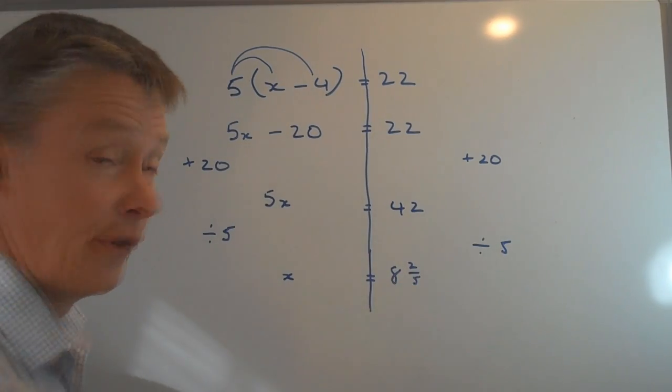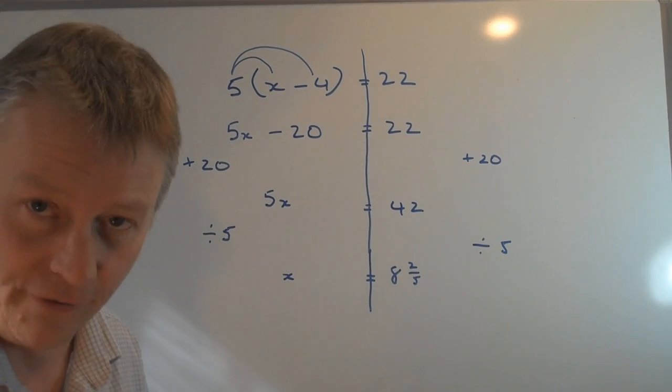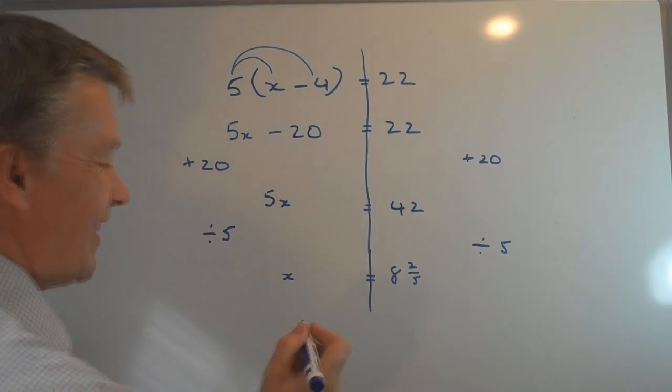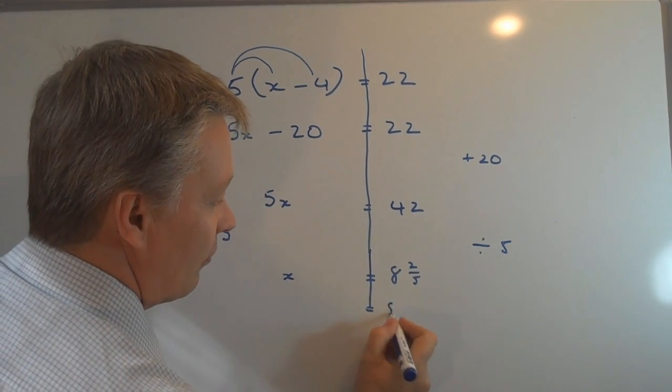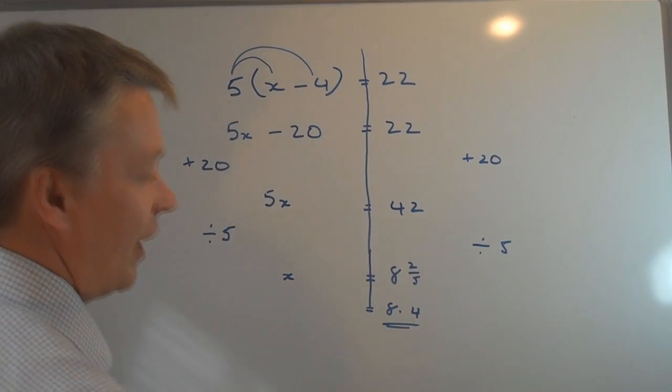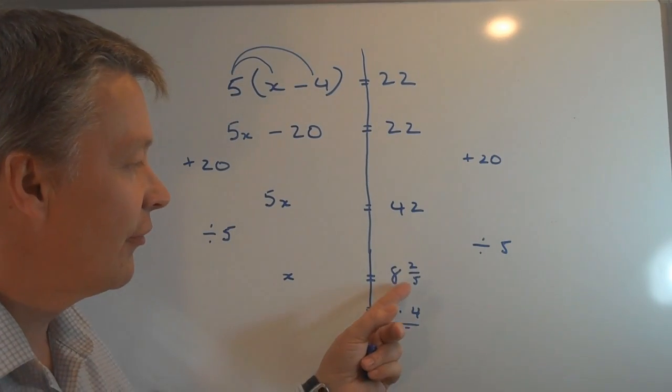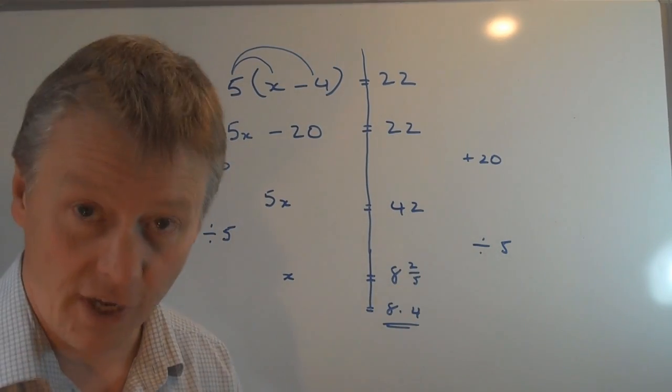5 divided by 5 is x on its own, equals 42 divided by 5 is 8 and 2 fifths. So 5 eights are 40, and then I have two fifths left over. If you want that as a decimal, I can make that 8.4. And if you look at some of the other videos, it will show you how to convert from fractions to decimals.